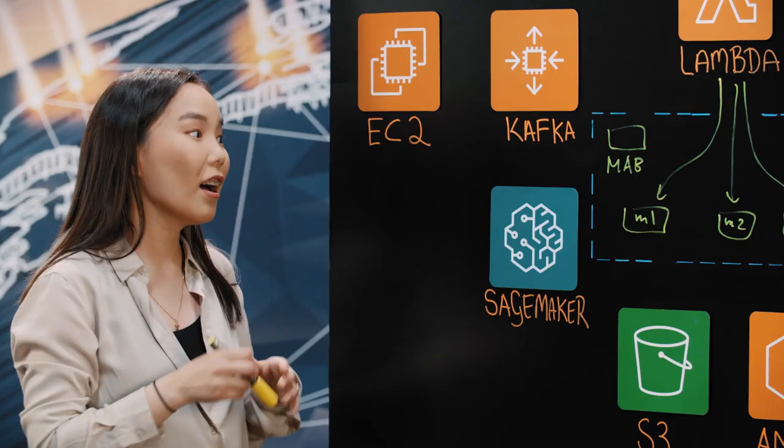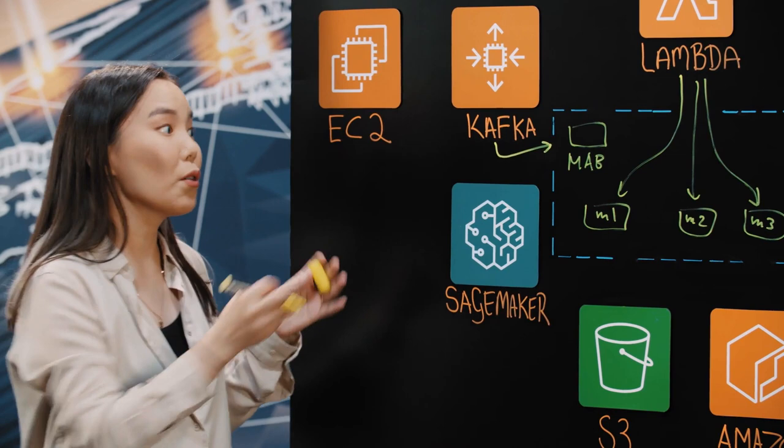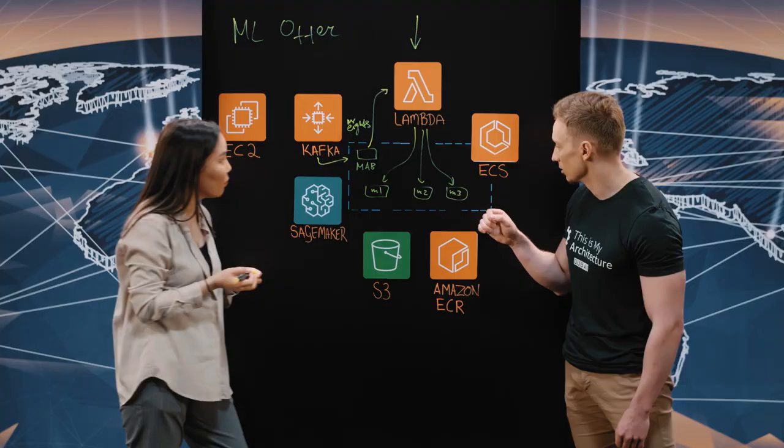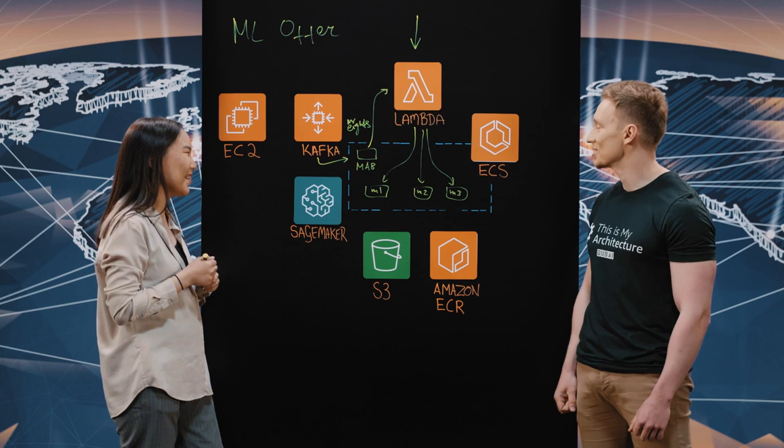In our Lambda function we implemented dynamic traffic allocation. The multi-arm bandit collects data from Kafka on how users reacted to different model predictions and periodically recounts weights, assigning different weights to the models. So basically we have continuous inner A-B testing between our models.